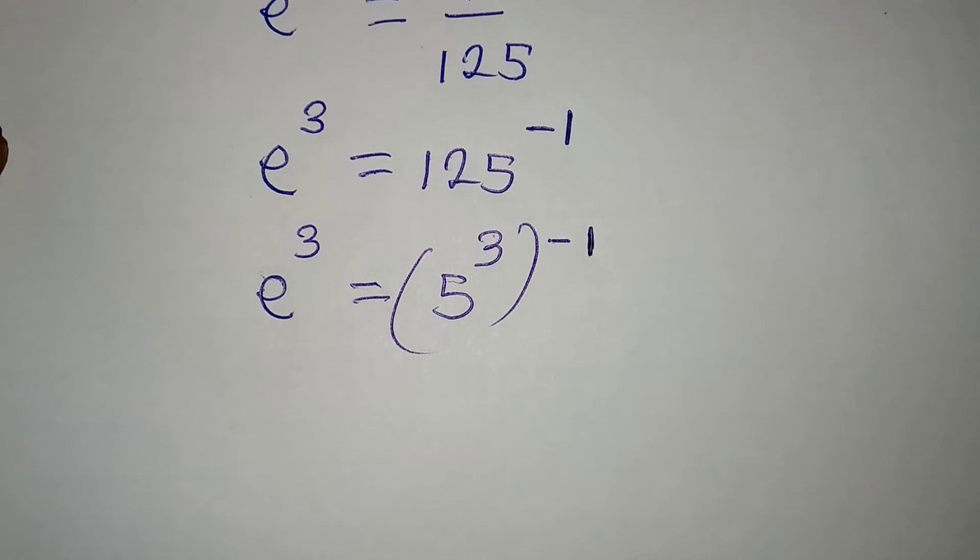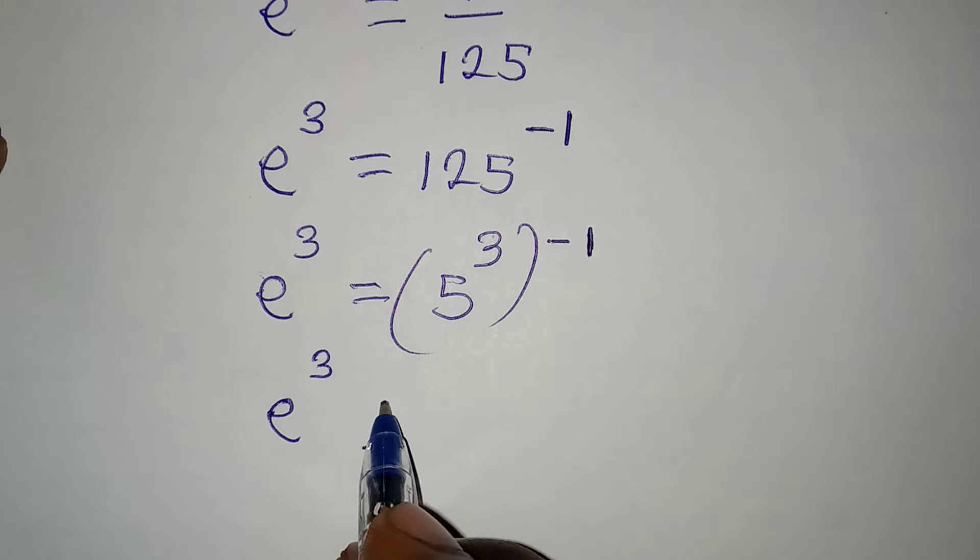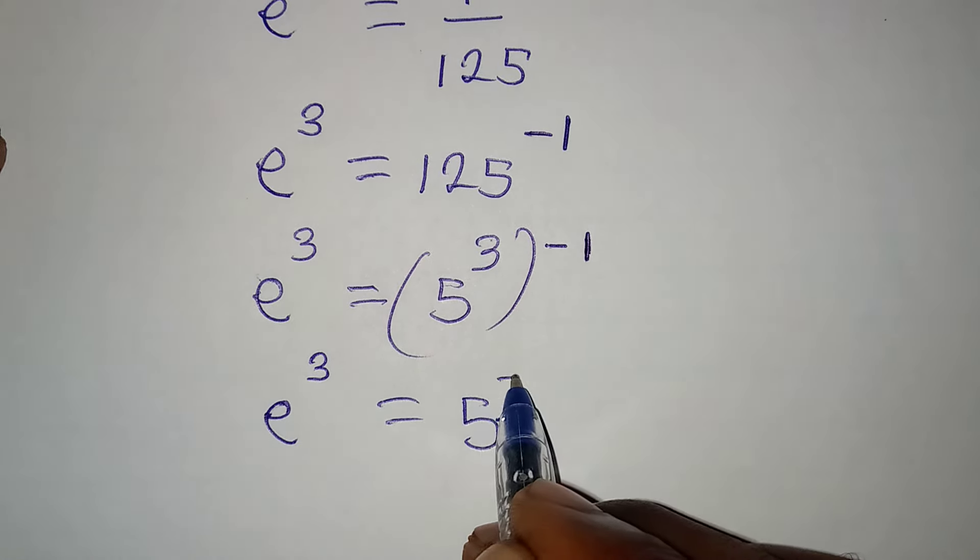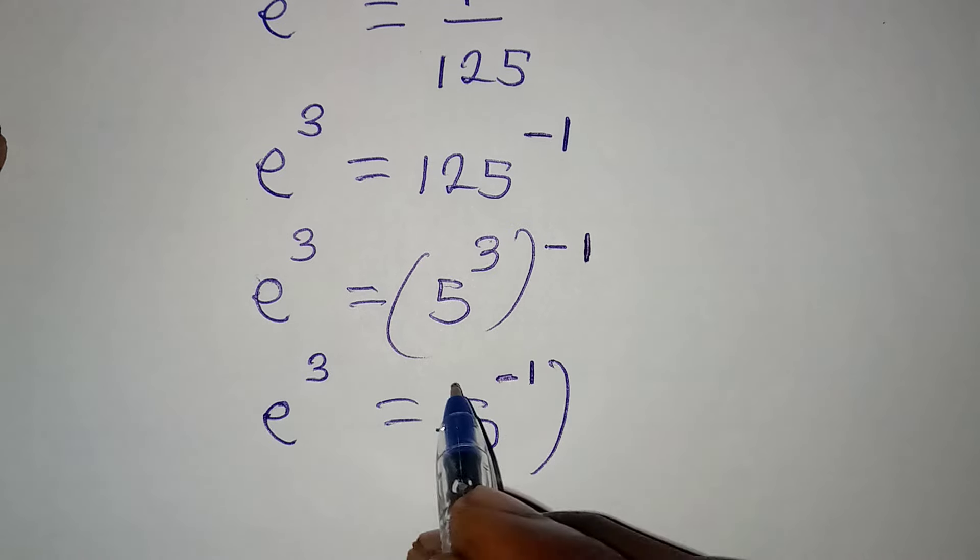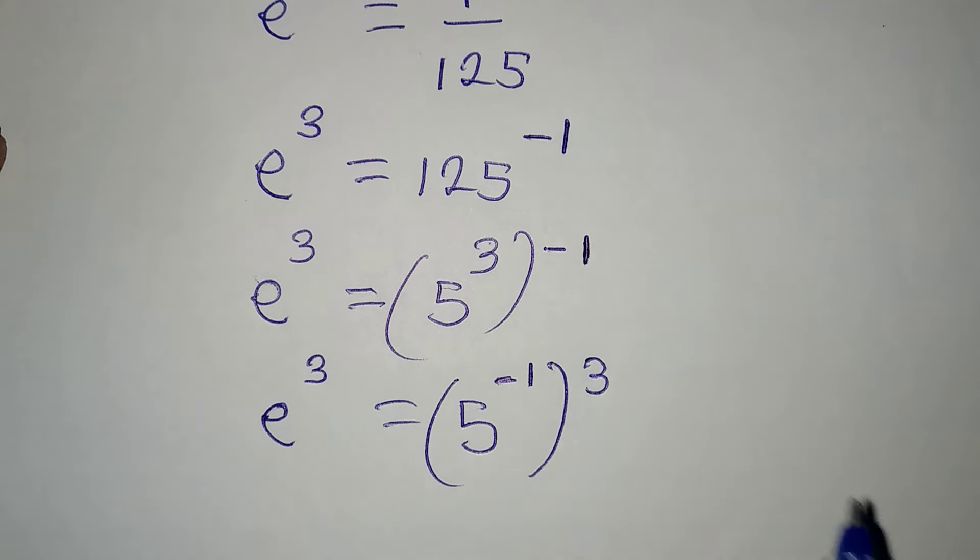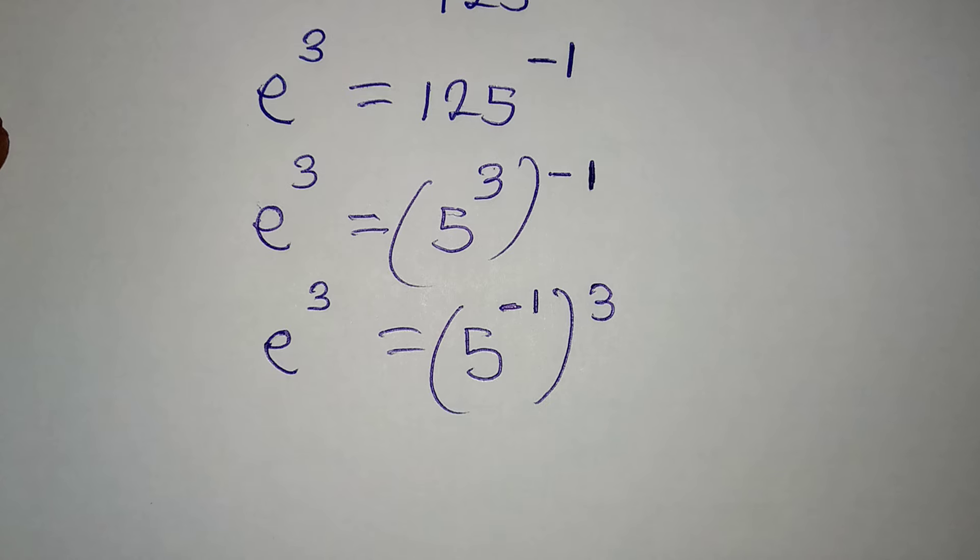Now, what do I do? I have to turn this around. So I have e to the power of 3 to be equal to 5 to the power of negative 1, then to the power of 3. Okay, so this is what I've done.